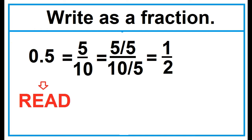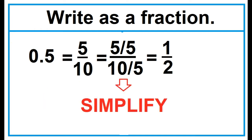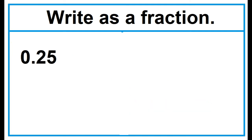To convert terminating decimals to fractions: read using its place value, write in fractional form, and reduce to its lowest terms to have a fraction in simplified form. Another example: write as a fraction, 0.25.